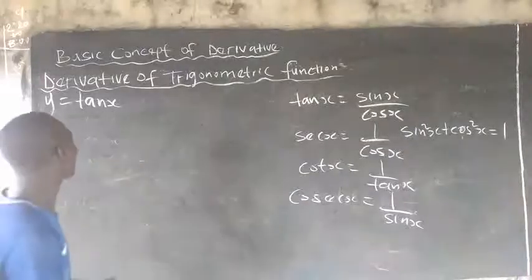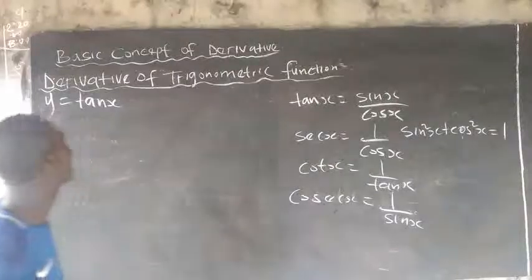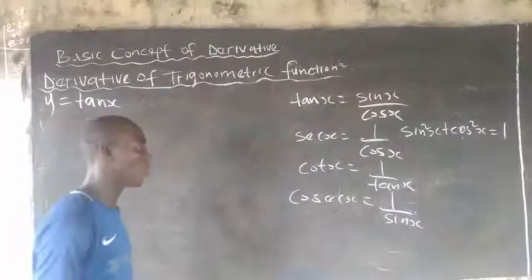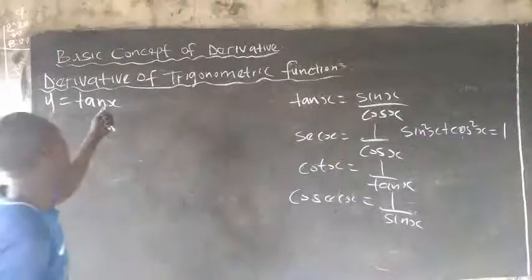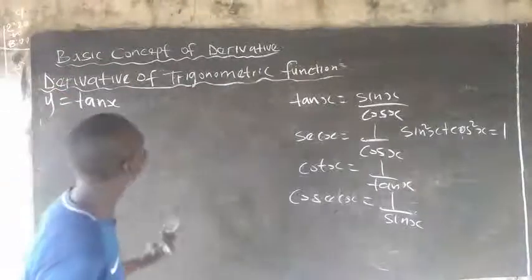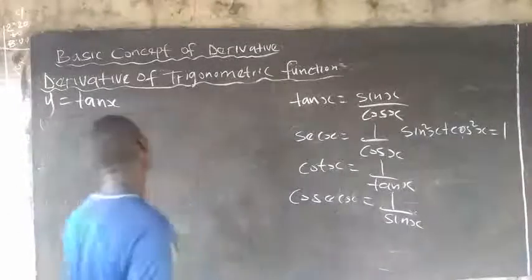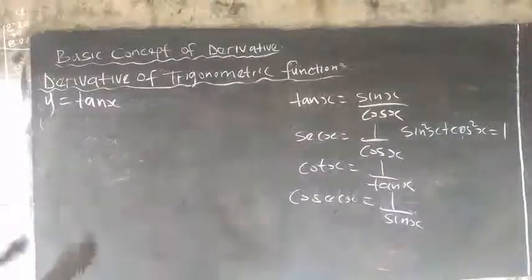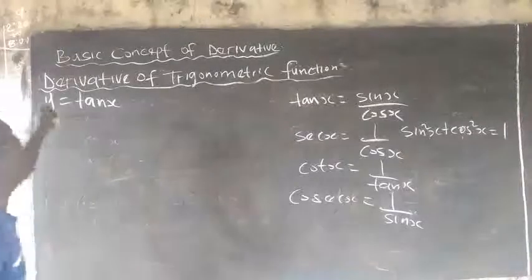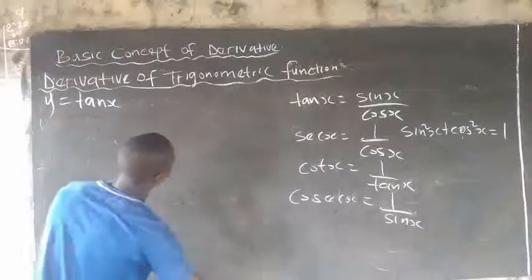Now, I know some of us will be thinking that we have been using the first principle for sin s and cos s — why can't we use the first principle here? I think the fastest method is to substitute sin s over cos s for tan s, then use the quotient rule to find the derivative. That's the method I'll be adopting here.